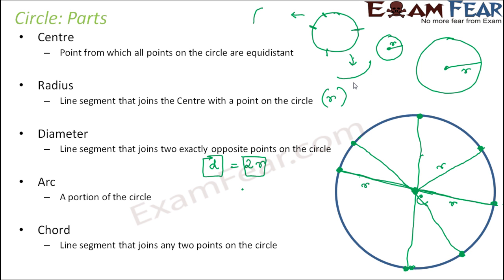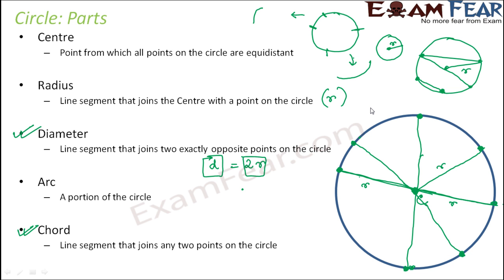Next is chord. A chord is a line segment that joins any two points on the circle. Many people confuse diameter and chord — they are similar but different. For a chord, the two points can be any two points on the circle: very close together, very far apart, or located exactly opposite each other. Any line segment joining any two points on the circle is a chord.